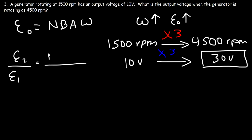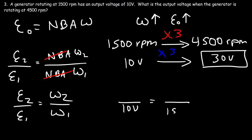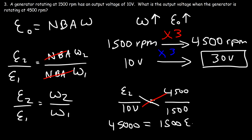To derive this formally, we find the ratio E₂/E₁. Since it's the same generator, N, B, and A are all constant and cancel. Therefore E₂/E₁ = ω₂/ω₁. With E₁ = 10 volts at ω₁ = 1500 RPM and ω₂ = 4500 RPM, cross-multiplying gives 10×4500 = 45,000 = 1500×E₂, so E₂ = 45,000 ÷ 1500 = 30 volts, confirming our answer.